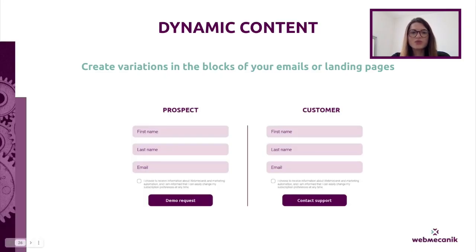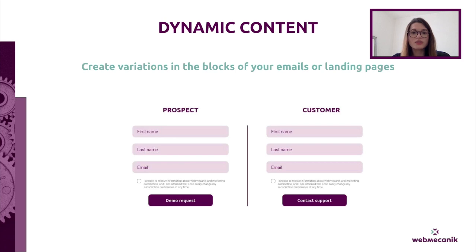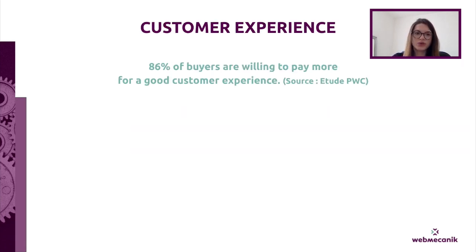First is dynamic content — a feature that allows you to create variations in blocks of your emails and landing pages, displaying different information for each contact to address them personally. It is an ideal tool to personalize your messages. You can make your emails, landing pages, SMS, forms, and pop-ups dynamic. This is also a great tool to save time because you don't need to create 20 versions of the same email — you just use dynamic content to change a few blocks based on custom fields, resulting in a personalized email for each contact.